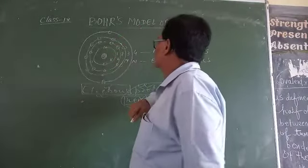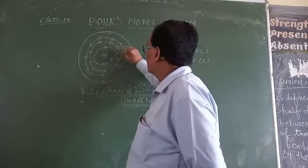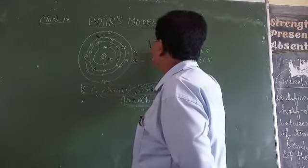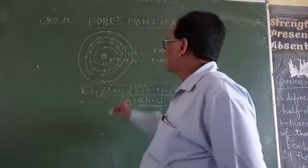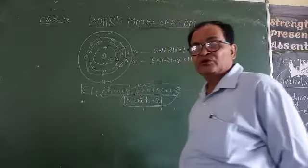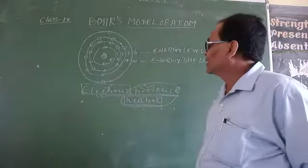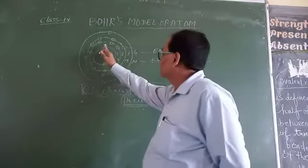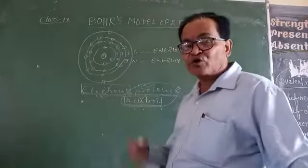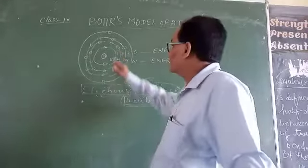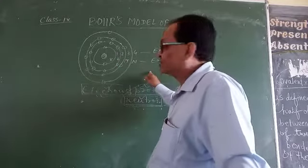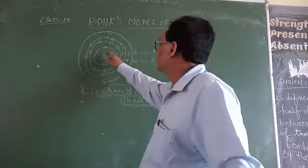Bohr represents these energy levels by numbers 1, 2, 3, 4, 5, 6 and so on, and by letters K, L, M, N, O, P, Q. We start counting the energy levels, energy cells or orbits from the nucleus.